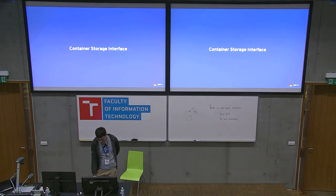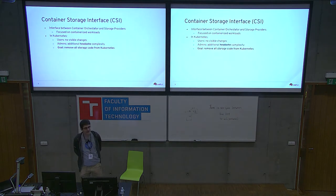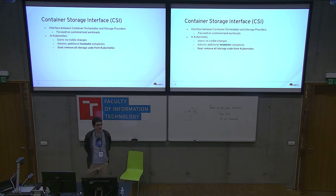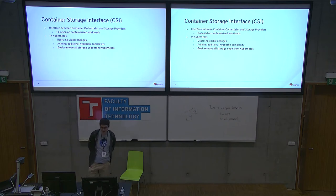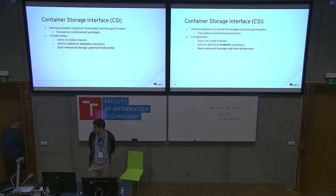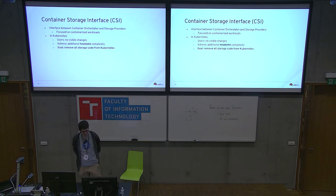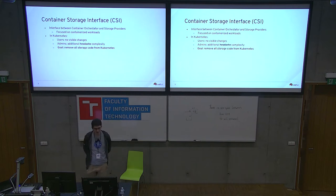So I will start with Container Storage Interface — what it is. In a nutshell, it is an interface between a container orchestrator — meaning Kubernetes, Docker Swarm, Cloud Foundry, Mesos — and storage providers. Storage provider is a pretty generic term: it could be traditional storage like iSCSI and NFS, or Samba; it could be software-defined storage like Gluster or Ceph; or it could be cloud storage like OpenStack Cinder, Amazon EBS, or Google PD. The standard interface focuses on workloads that run as containers.